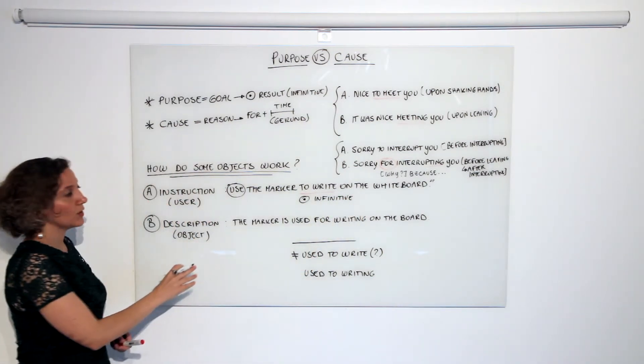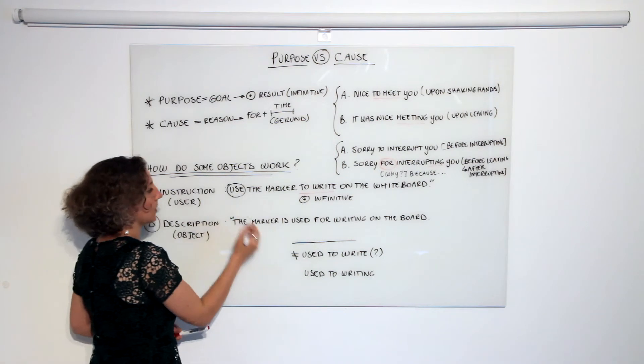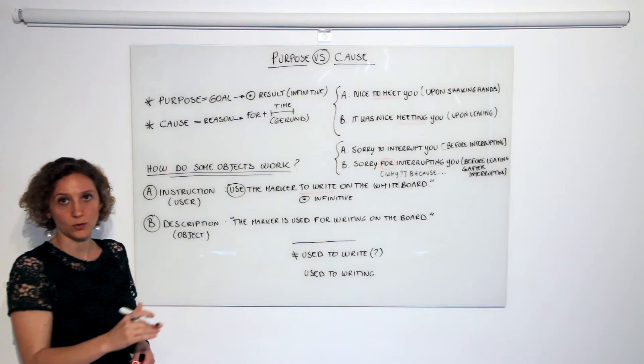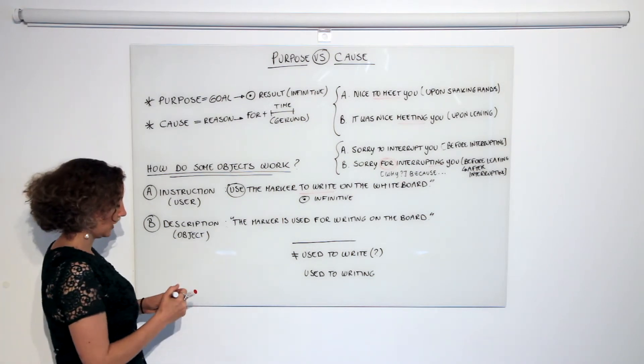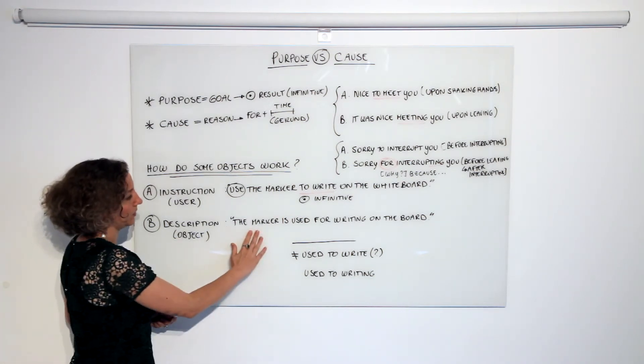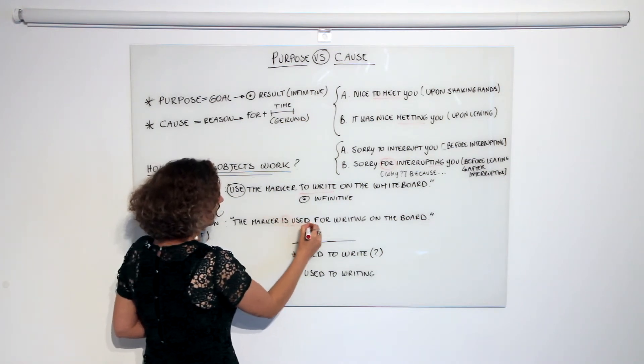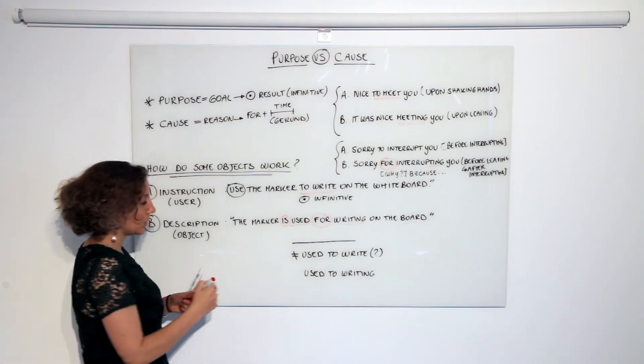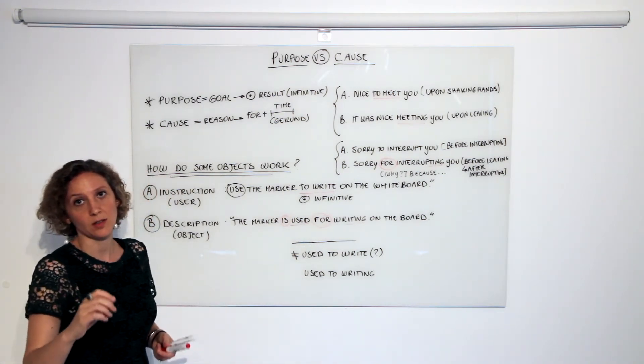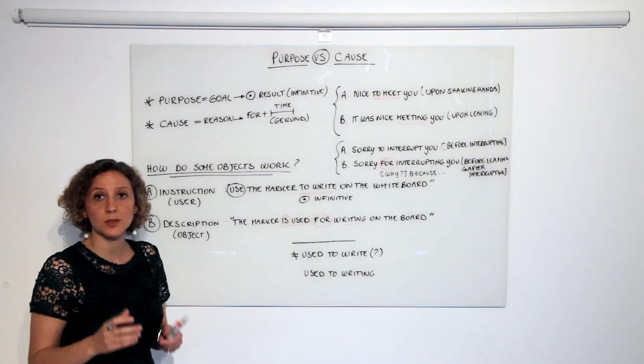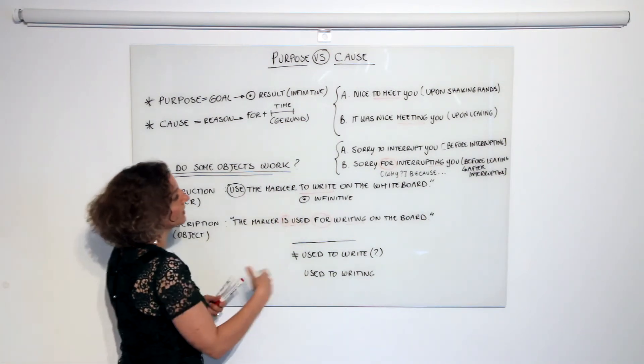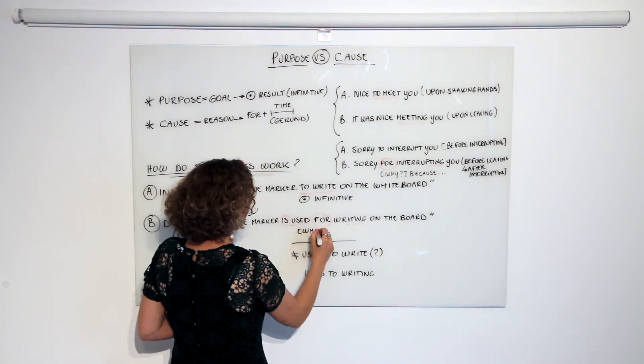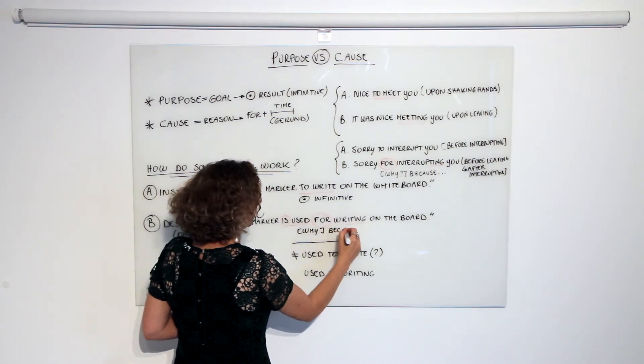By contrast, if I focus on the object, I will say 'the marker is used for writing on the board.' So what I'm going to have is 'marker' as subject, 'is used,' and then 'for' plus gerund, which means why is the object, or better still, why was the object created in the first place. So once again the question is 'why?' Because we need it for writing.